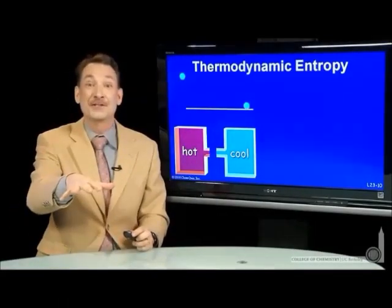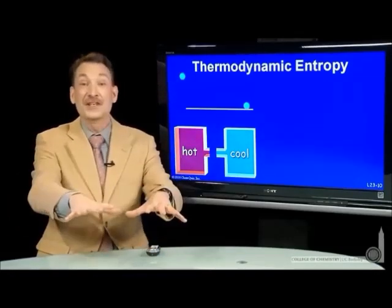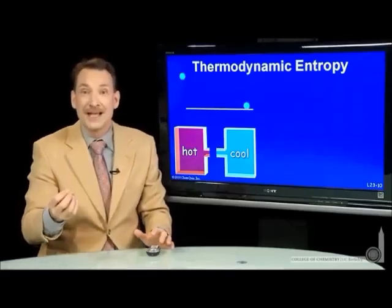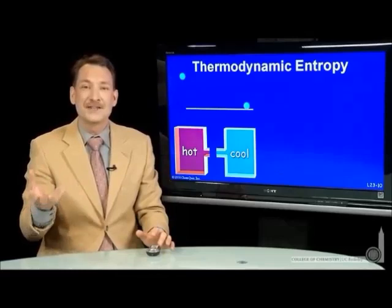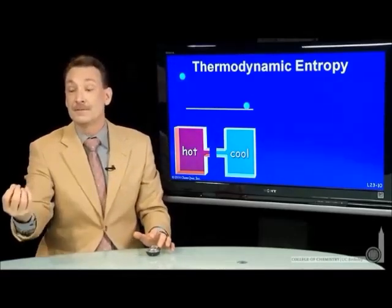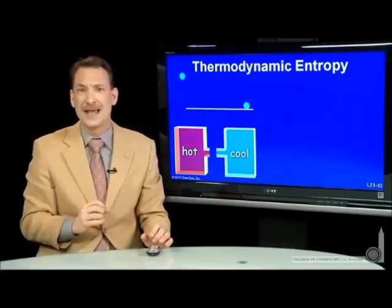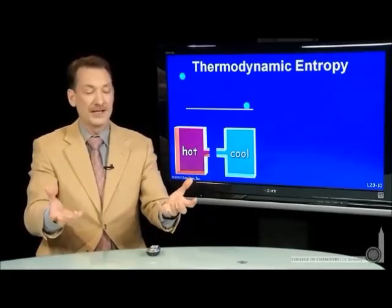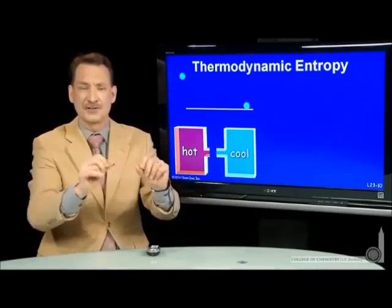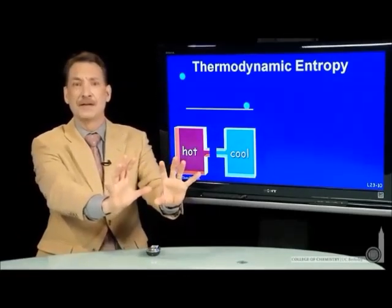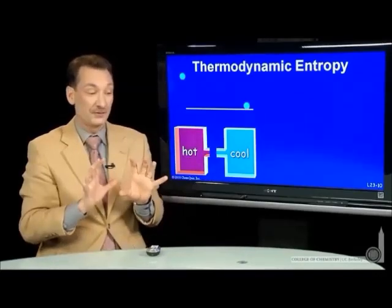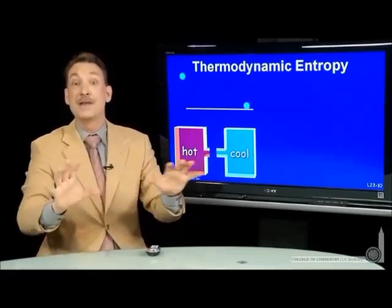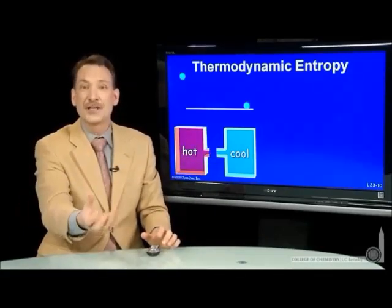The natural direction of processes in the universe is determined by entropy changes — to increase the entropy of the universe by dispersing energy over as many microstates as possible. But practically, it's difficult to measure the number of microstates. So we need entropy related to a parameter we can measure. It turns out heat is that parameter. Work is a concerted action of particles all moving in the same direction — relatively few microstates. Heat is the random motion of particles, involving many microstates. So heat is the more naturally associated parameter for entropy.